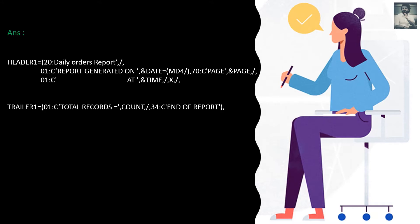Let's see the solution. For the header, at the 20th position it will say 'Daily Orders Report'. This moves to the next line, where from the first position it says 'Report Generated On' and gives the date in MD4 format — date, month, and year separated by slashes. At the 17th position it says 'Page' and the ampersand-PAGE keyword will give you the page number.